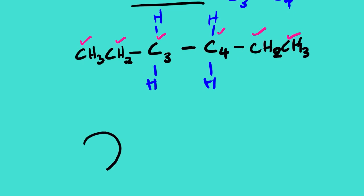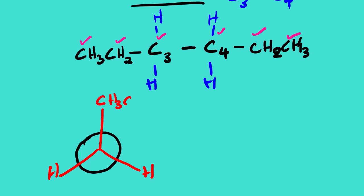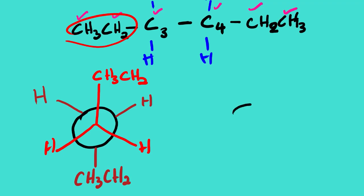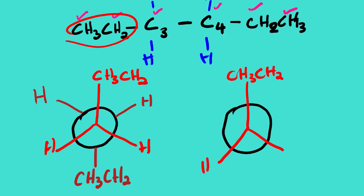Drawing the most stable conformation, we have CH3CH2 (ethyl) on C3 with two hydrogens, and CH3CH2 (ethyl) on C4 with two hydrogens in a staggered arrangement. Drawing the least stable, we have a totally eclipsed conformation with CH3CH2 and H on both carbons eclipsing each other.